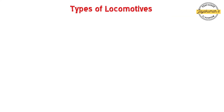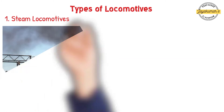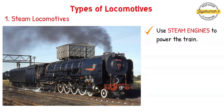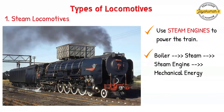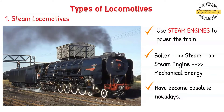The first type is steam locomotives. Steam locomotives use steam engines to power the engine — it is the oldest type of locomotive. Coal is used as fuel to produce superheated steam from the boiler, which is used to run the steam engine. The steam engine converts thermal energy into mechanical energy, which is used to power the train.